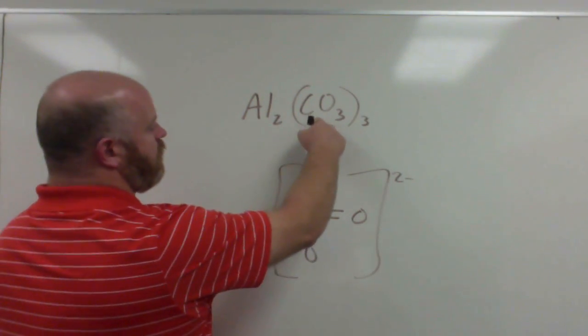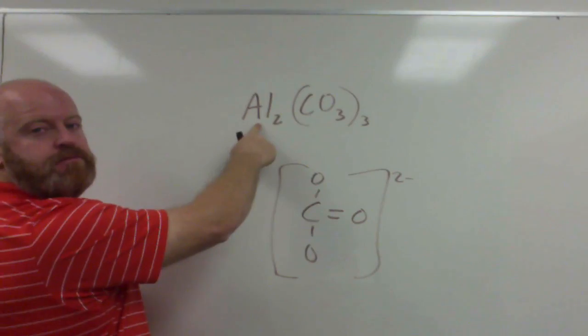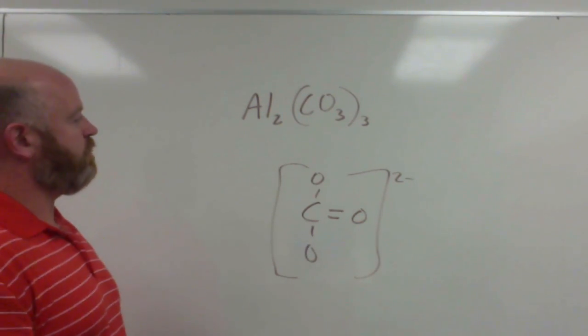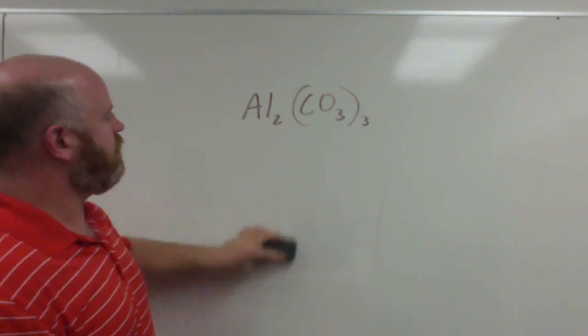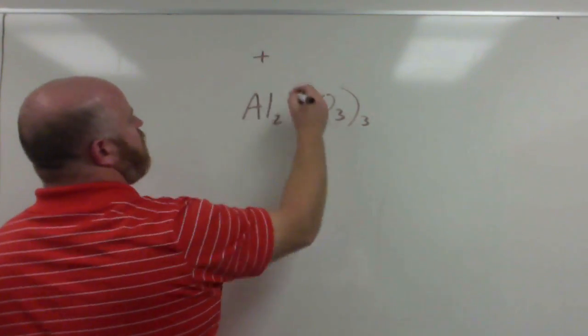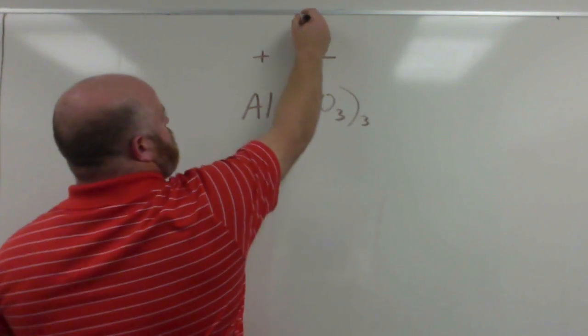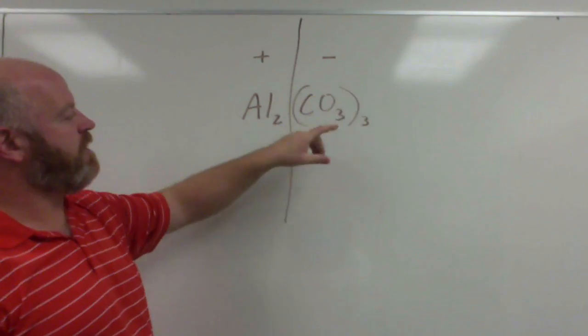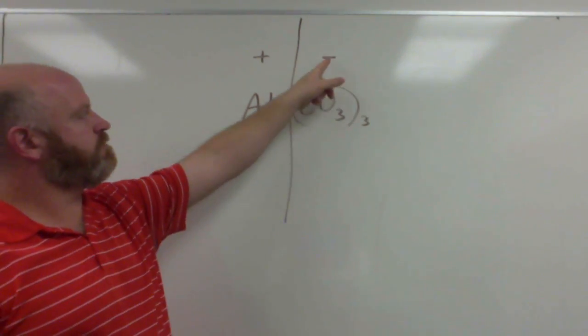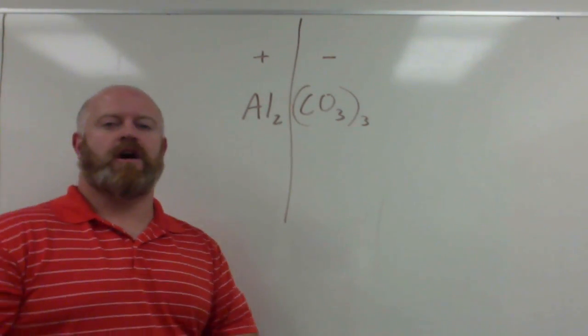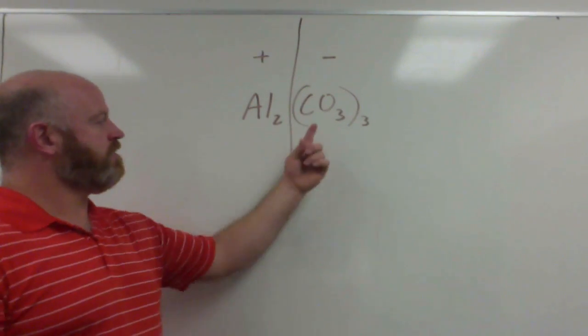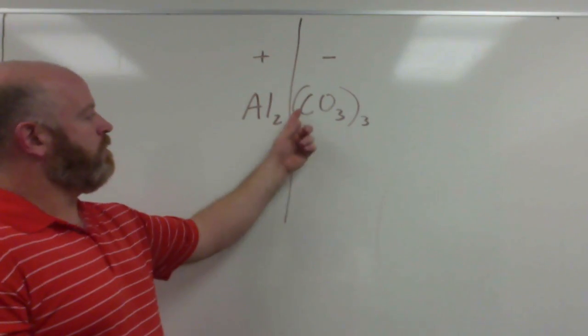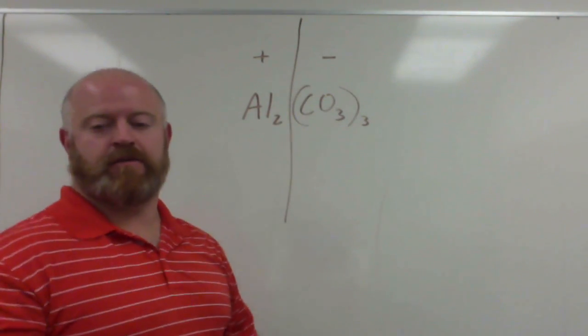That molecule would then bond to a metal and form an ionic compound. So what we have is, we still have a positive and a negative to our normal molecule. We still have our positive side and our negative side, but now our negative is just a bigger ion. It's not a single ion, it's now what we call a polyatomic ion, which is a group of atoms put together to make up the ion.